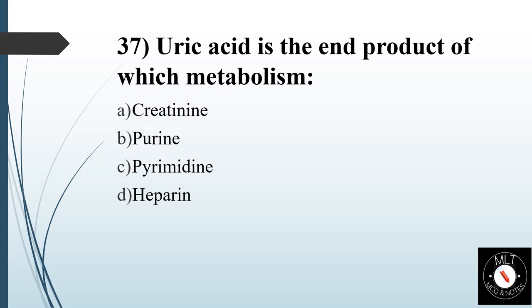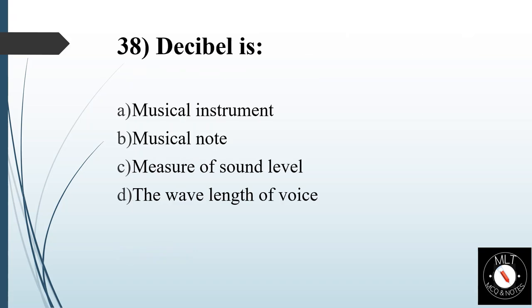Thirty-seventh question. Uric acid is the end product of which metabolism? Option A: Creatinine. Option B: Purine. Option C: Pyrimidine. Option D: Heparin. Answer is Option B: Purine.